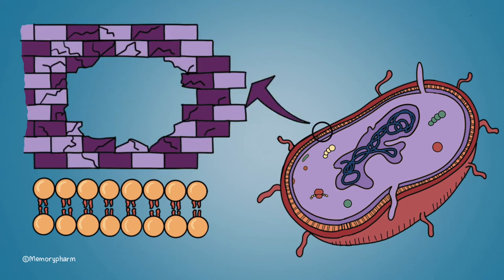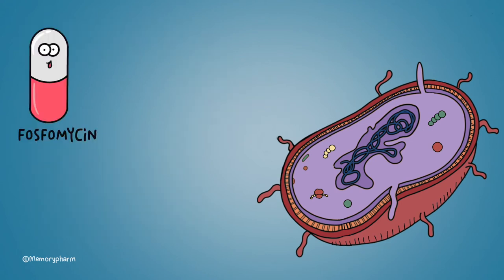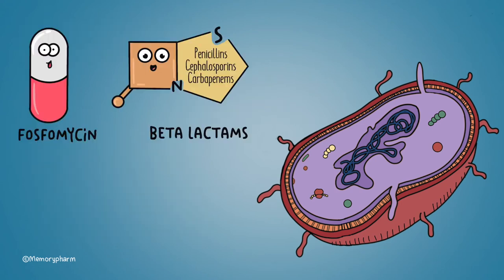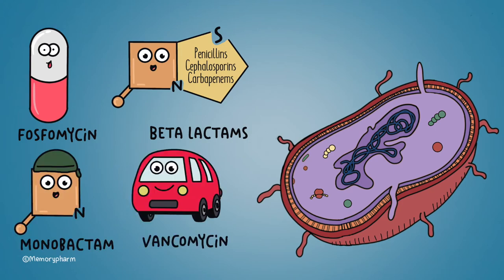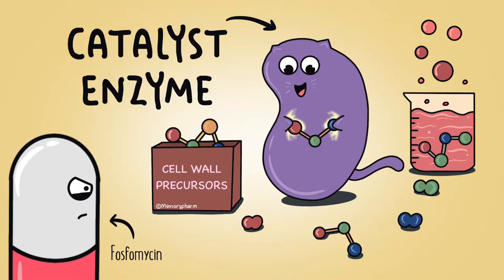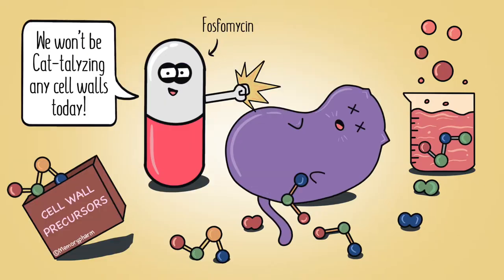A few antibiotics target the creation of the cell wall itself. This includes phosphomycin, beta-lactams, monobactam, and vancomycin. Phosphomycin inhibits the enzyme that catalyzes the first step of cell wall synthesis.